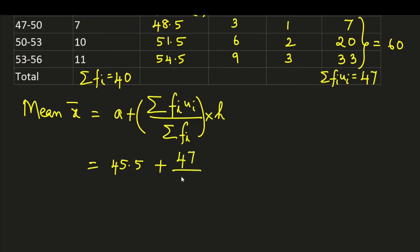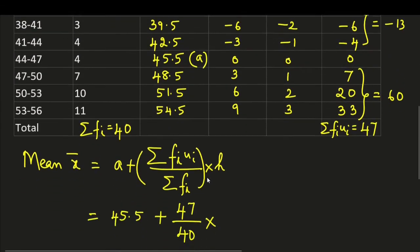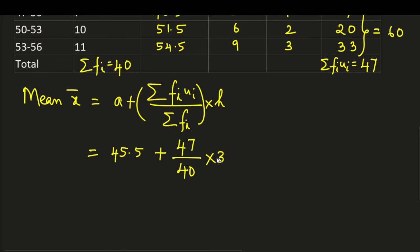Sigma fi ui is 47. Sigma fi is 40 into h value is 3. So here we get 45.5 plus this is 141 by 40.